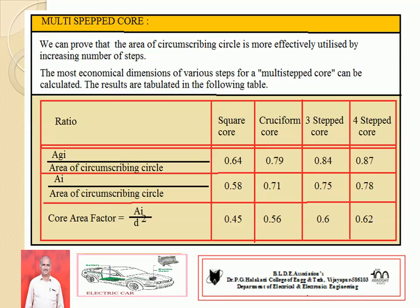As compared to square core, cruciform core is better. As compared to cruciform core, three-stepped core is better. As compared to three-stepped core, four-stepped core is better. The table shows that the area of circumscribing circle utilization reaches 0.87 in a four-stepped core. Hence, by increasing the number of steps in the core, it utilizes the core area more properly. In practice, stepped cores are more useful rather than square and rectangular cores. Thank you, sirs.